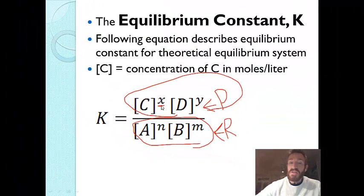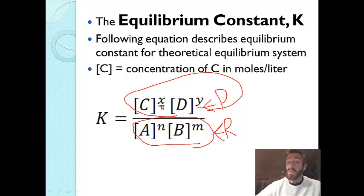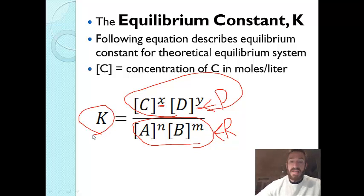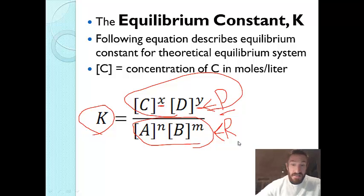The coefficients become exponents — whatever number is in front of C is raised to that exponent, and likewise for D. When you divide and multiply everything out, you solve for K, the equilibrium constant. If K is large, we have a lot of products at equilibrium. If K is very small — less than 1 — we have a lot of reactants.